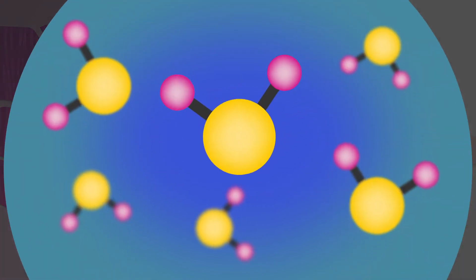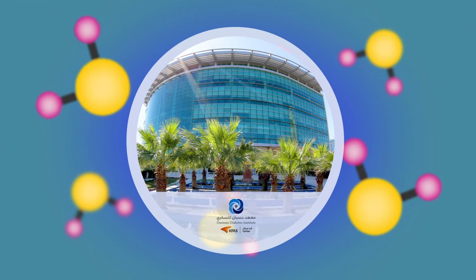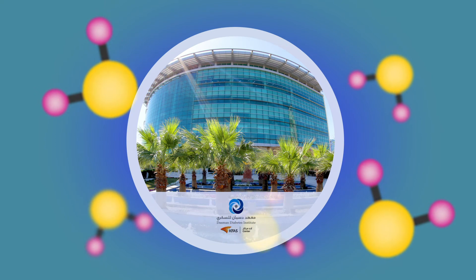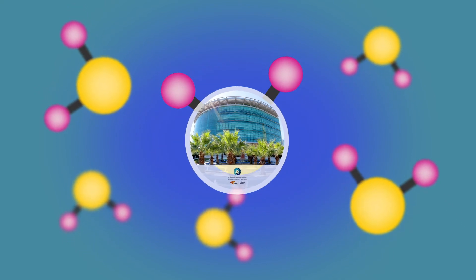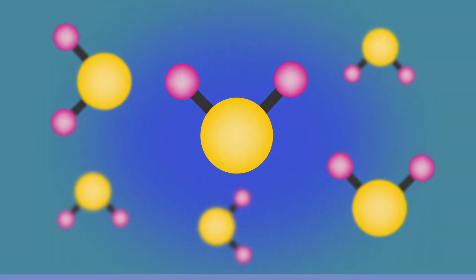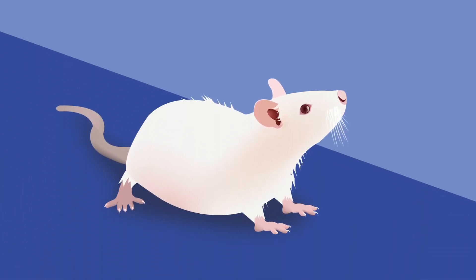In a recent study, researchers at the Dasman Diabetes Institute zeroed in on the molecular mechanism linking hydrogen sulfide to the reduction of sarcopenia. The team first performed a comprehensive set of tests on rats that modeled type 2 diabetes, since patients with diabetes are at higher risk of developing sarcopenia.